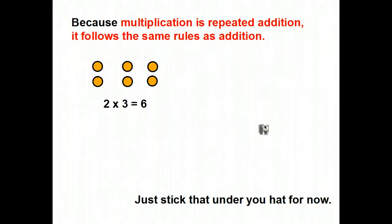Because multiplication is repeated addition, it follows the same rules as addition. Let's take a look at this. We've got 2 taken 3 times is 6. There are 3 groups of 2, and together I have 6.